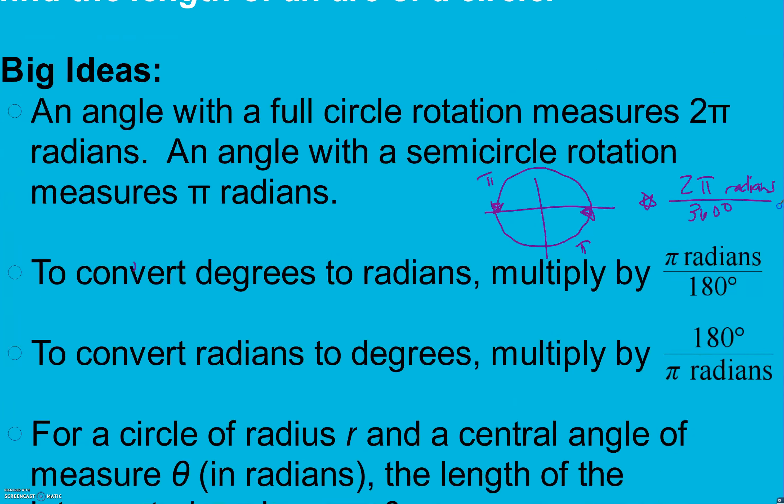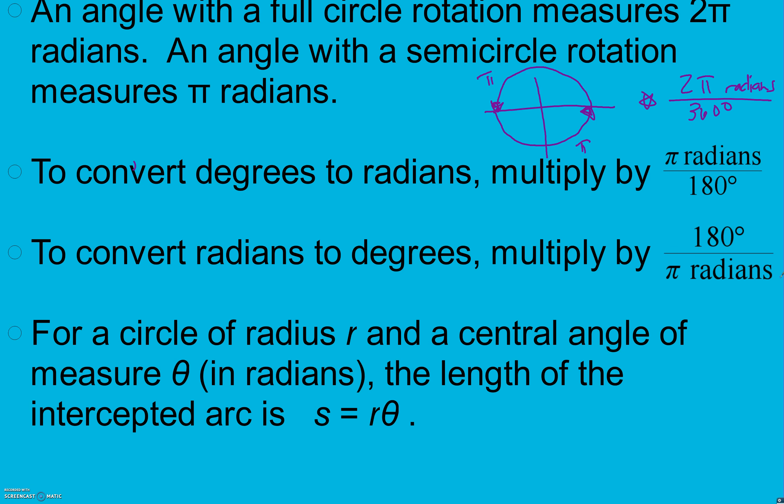For a circle of radius R and a central angle measured θ in radians, the length of the intercepted arc is S equals R times θ. So our arc length, which is what S is, is our radius times theta. A central angle of a circle is an angle with a vertex at the center of a circle.